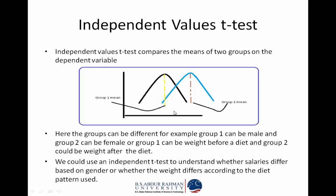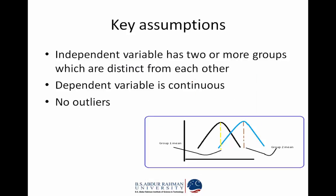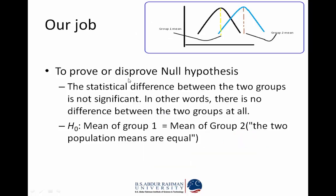The independent samples t-test is an important test for statistical analysis. The key assumptions are: the two groups are distinct from each other with no common values, the dependent variable is continuous, and there are no outliers in the data. Our job is to disprove or prove the null hypothesis — that the statistical difference between the two groups is not significant, meaning the mean of group 1 equals the mean of group 2.